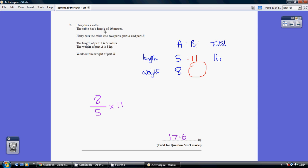We know the total length of the cable is 16. Setting up a length column, the length of A is 5. Since A and B together form the total, the length of B must be 11.